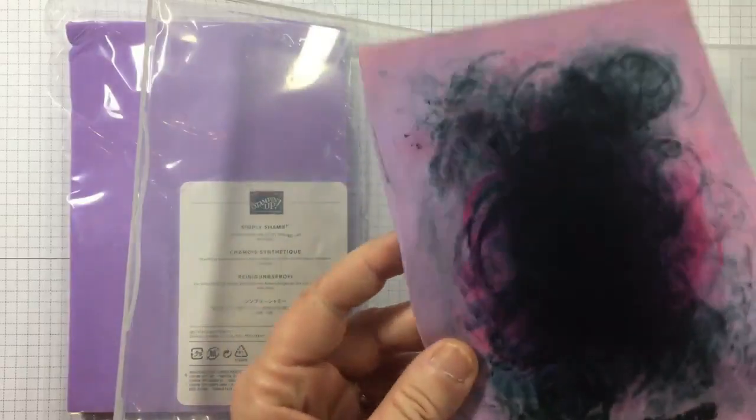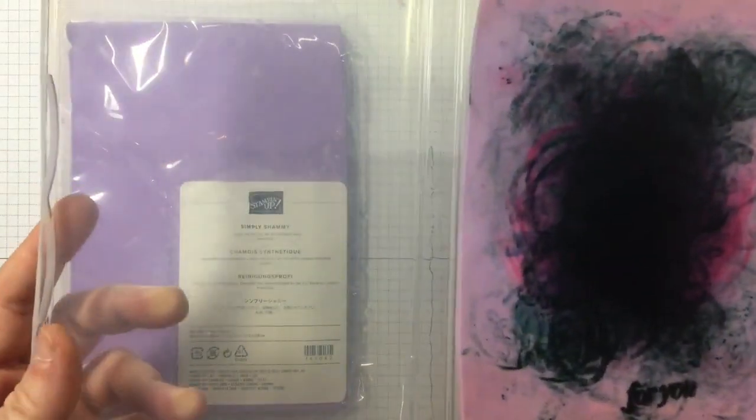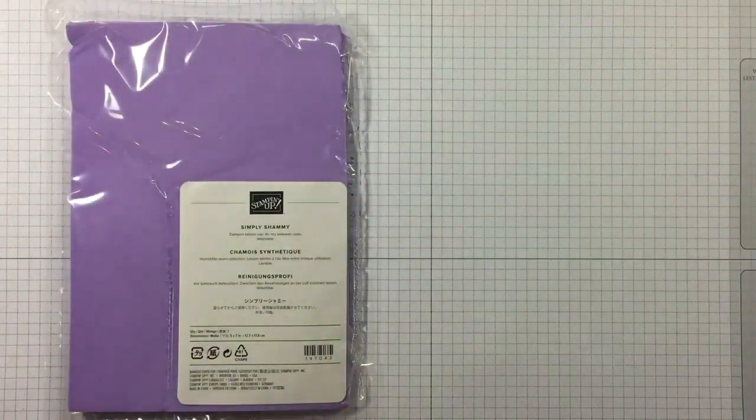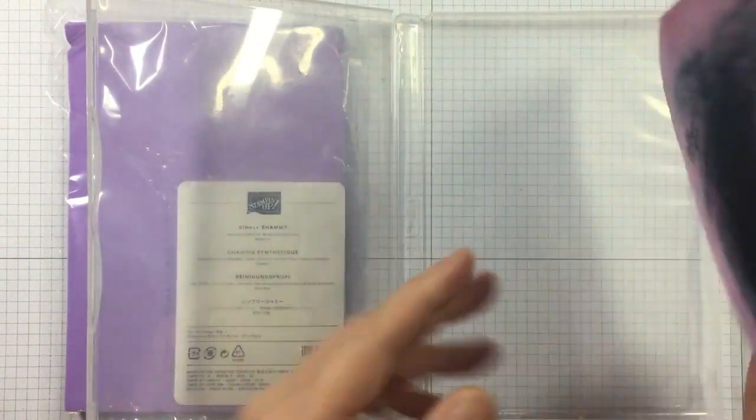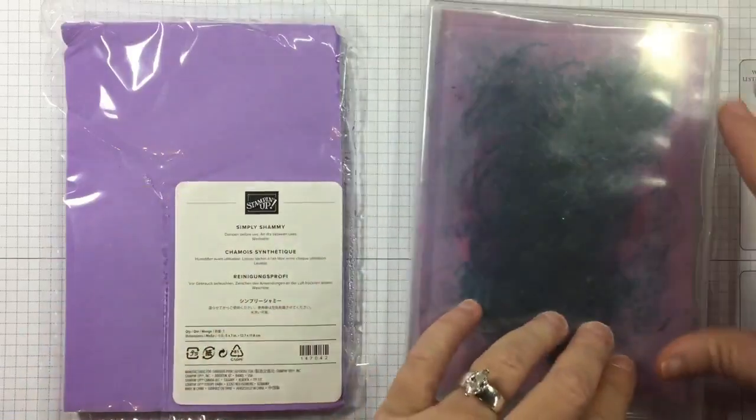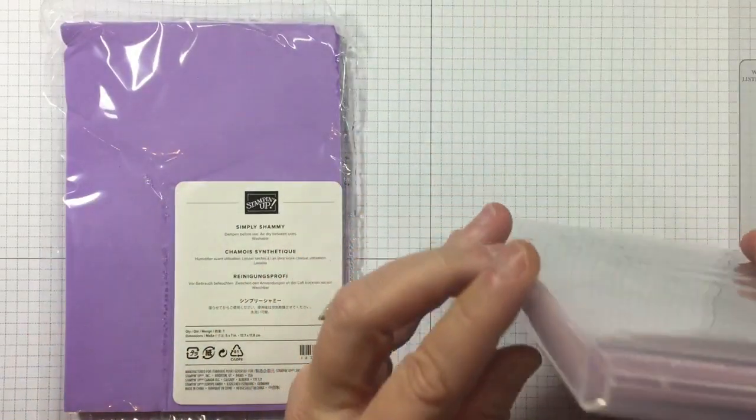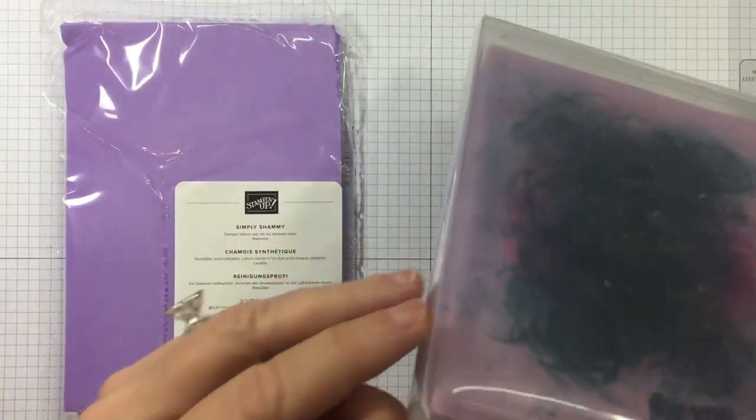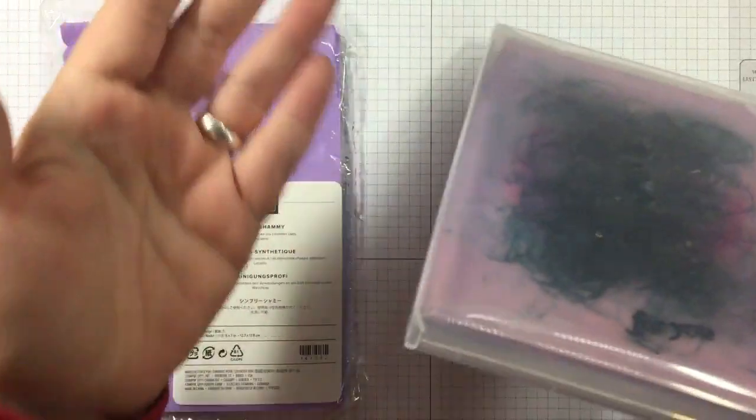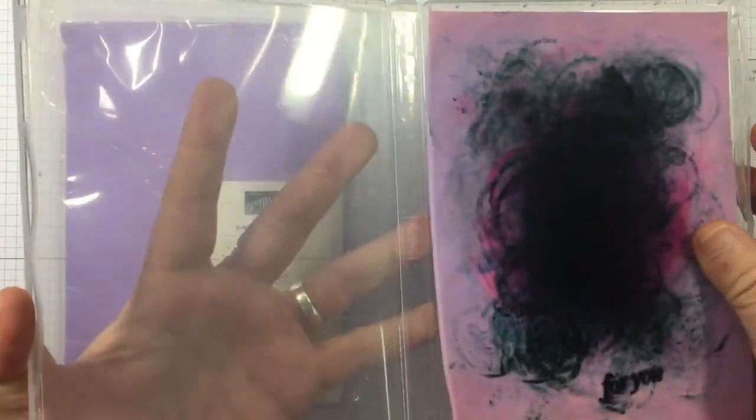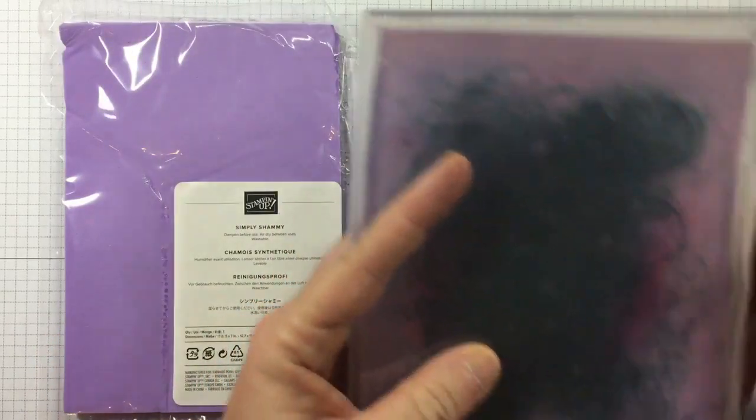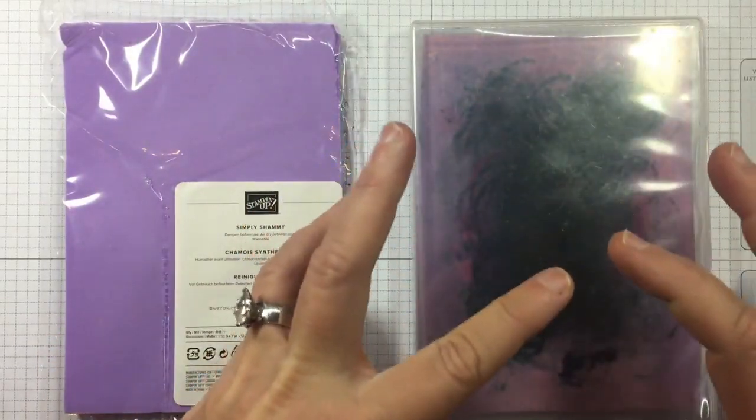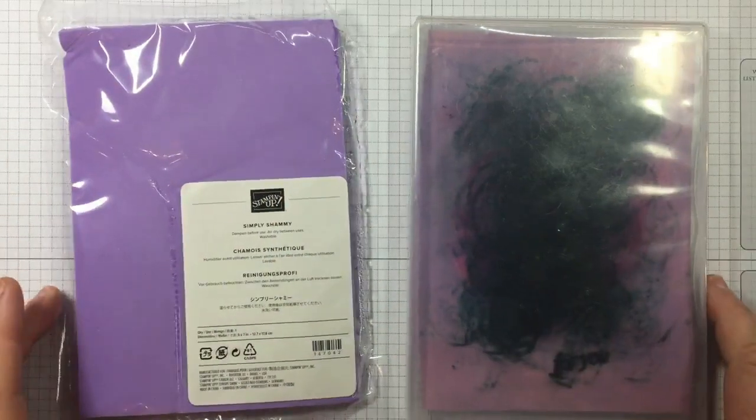People will say, oh, it will get mildewy. I've been using this since they came out. There's the sniff test. No mold, no mildew, okay? And here's why. This stamp case is not airtight, okay? So, air can go and come from the case. So, it's breathing. That's why it's eventually getting dry, but yet it's locking enough of the moisture in to keep it from drying out every day.